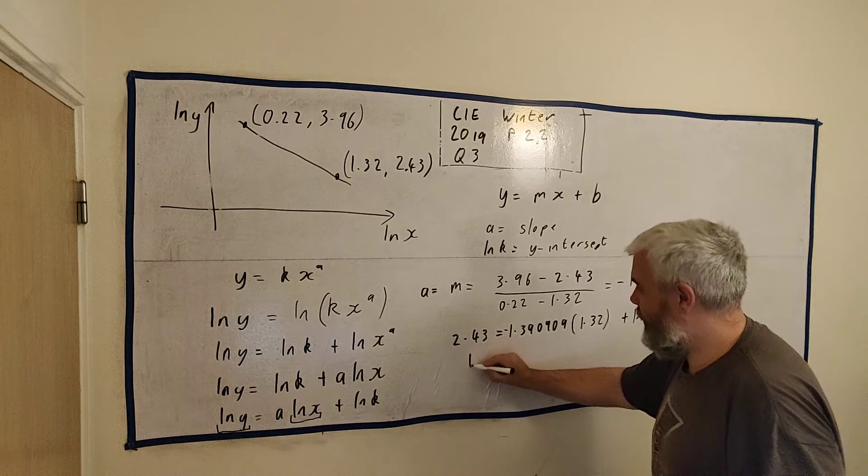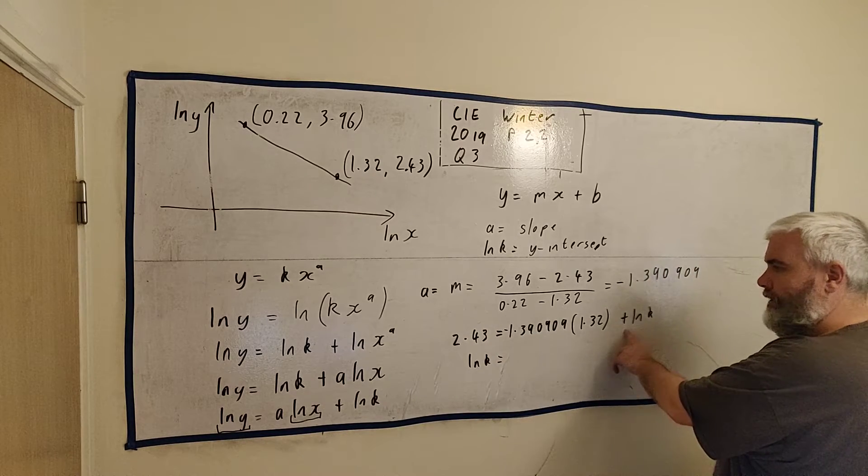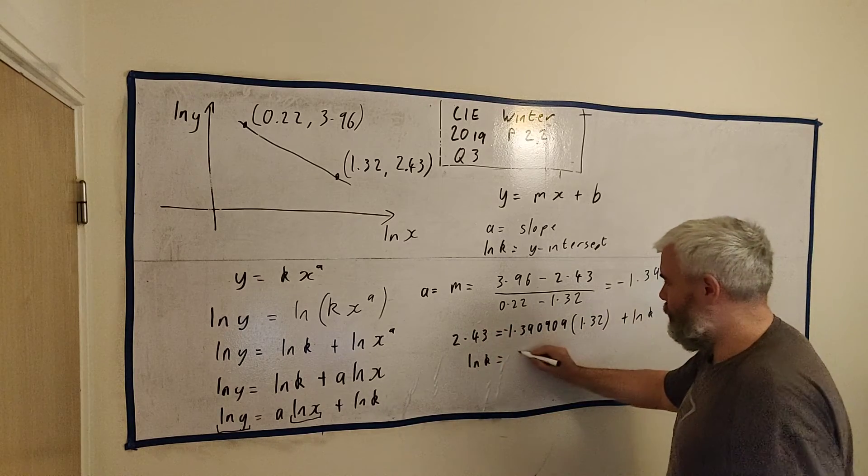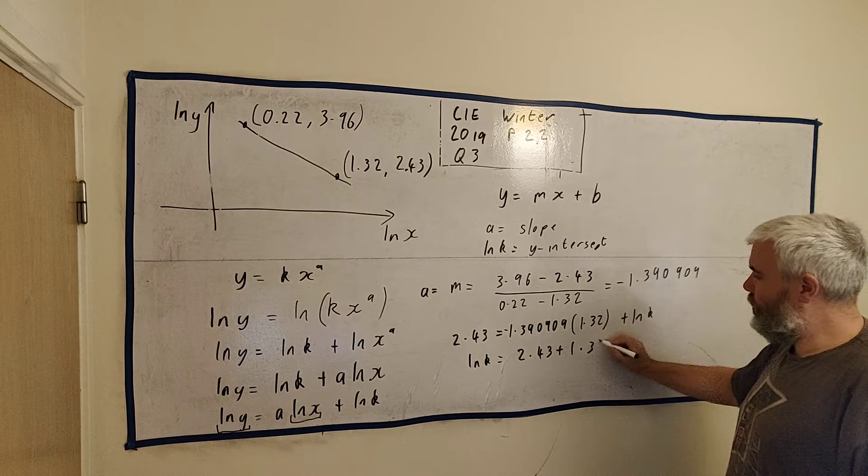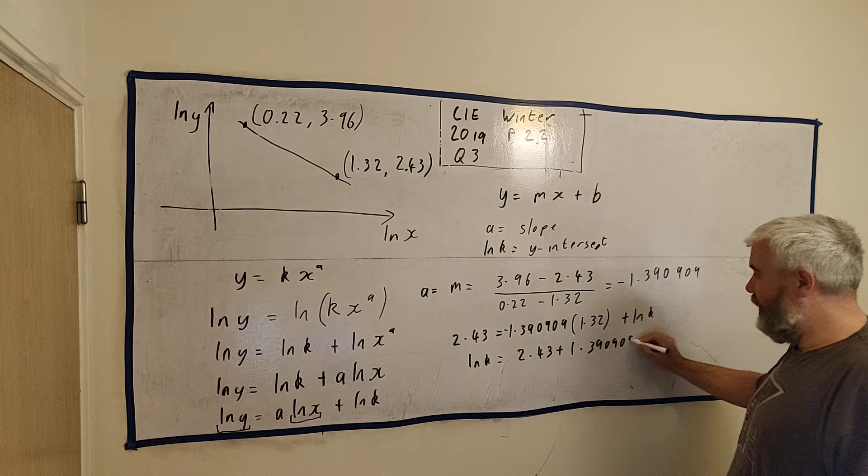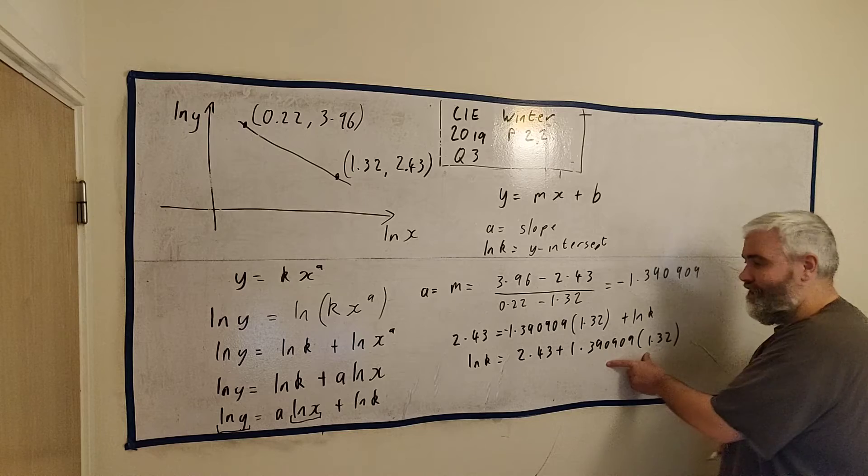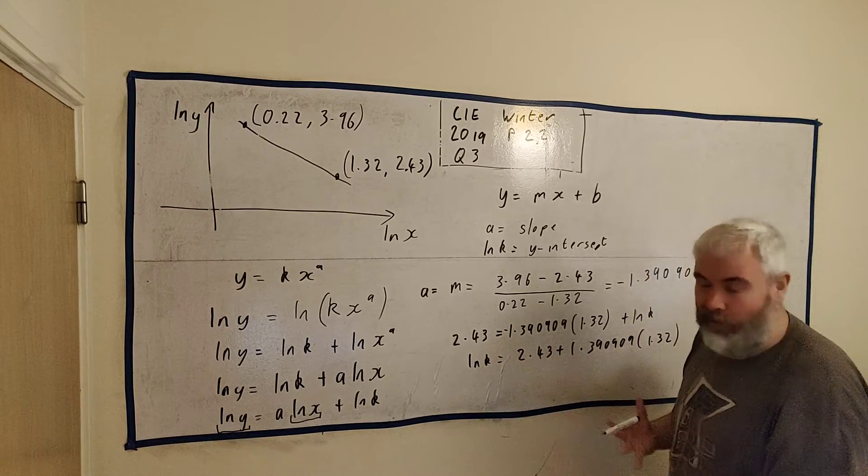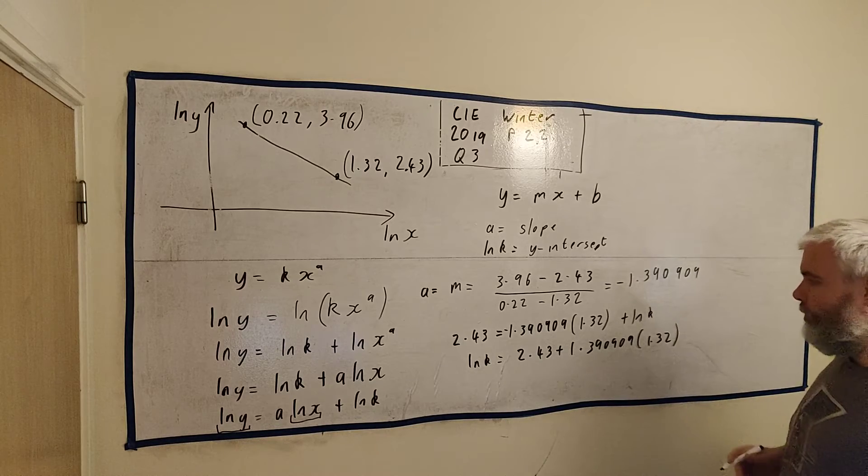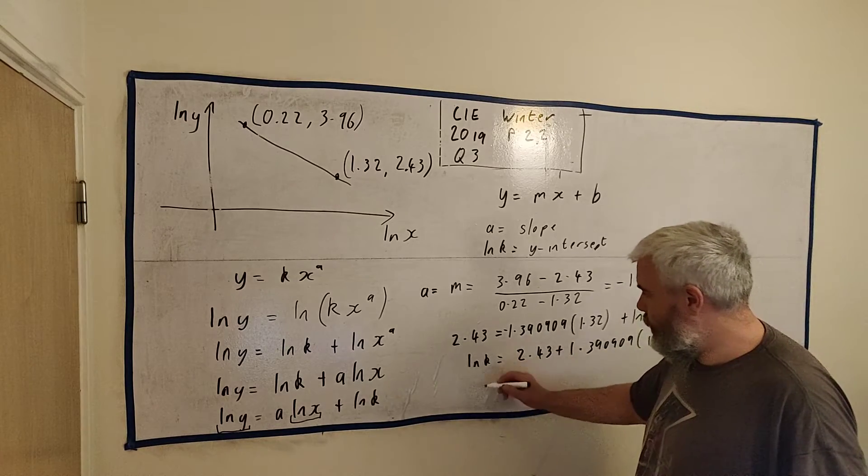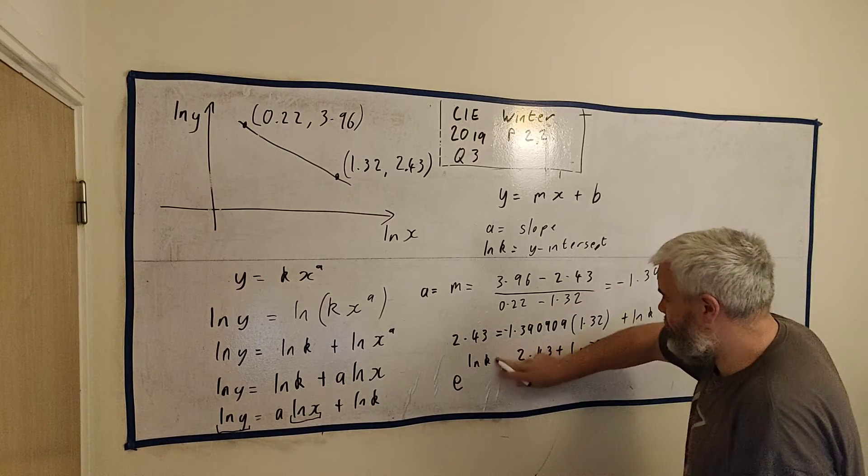Just rearrange all this. So we have natural log k is equal to, let's see what this would look like. That would be a plus. So 2.43 plus 1.390909 multiplied by 1.32. But because of natural logs involved, it will change it significantly. But we don't want natural log k. We would like to put them both to the power of e.